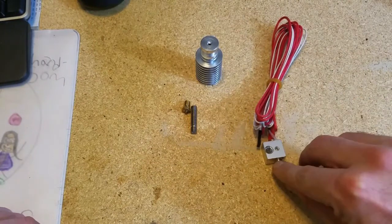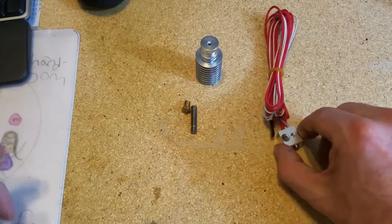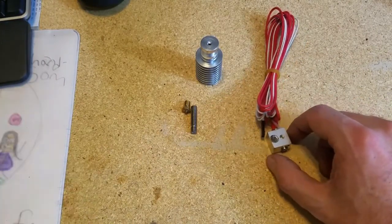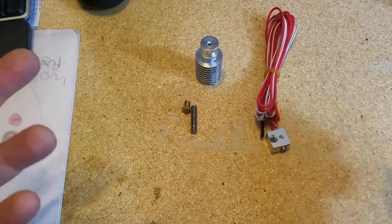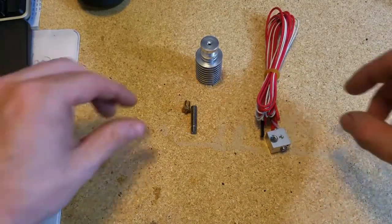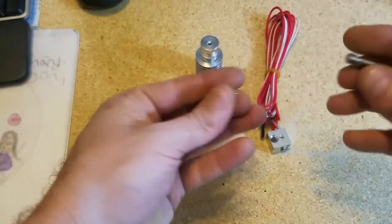You always want the thermistor and the heater secured to the block. Just start with that. If you're doing this because you had a leak on your nozzle, then I'm gonna go ahead and explain to you what happened.